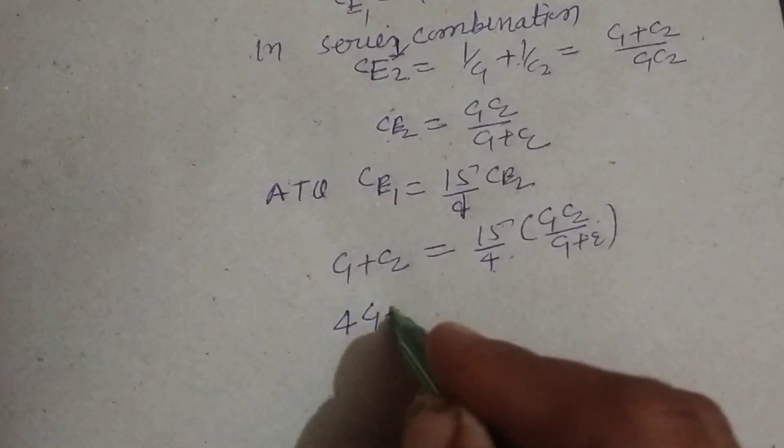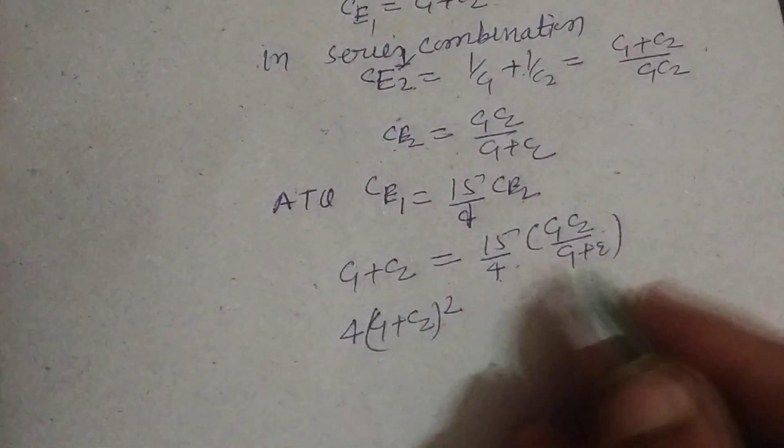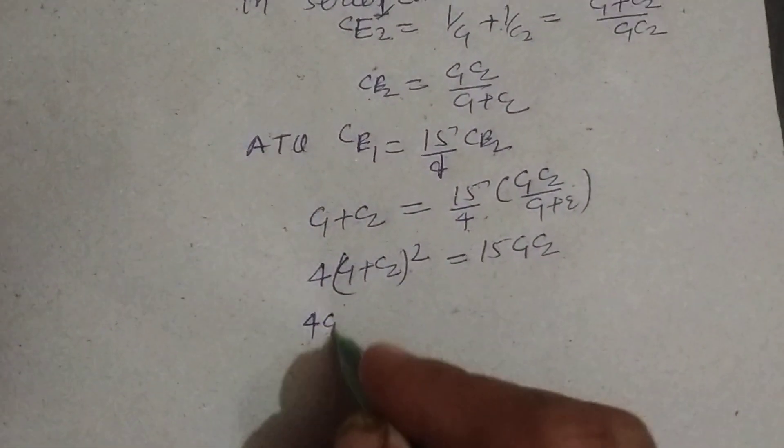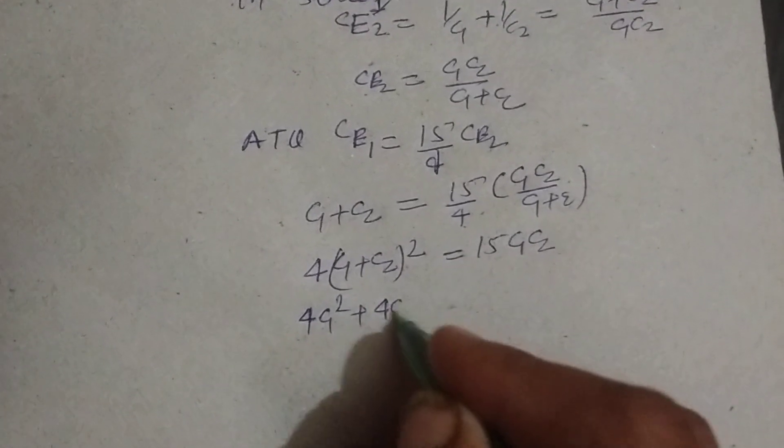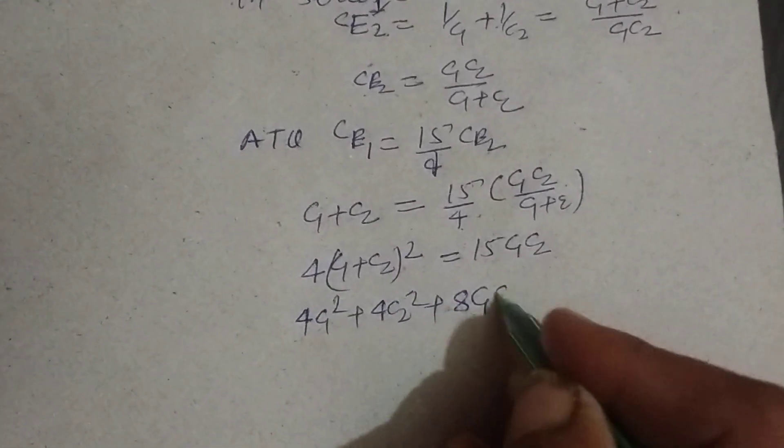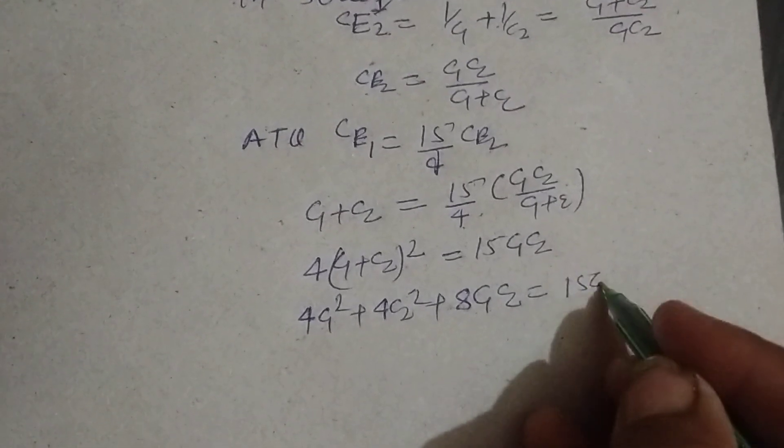we got C1 plus C2 whole square. This is 15 times C1 C2. So this is 4 C1 square, 4 C2 square and 8 C1 C2, 15 C1 C2.